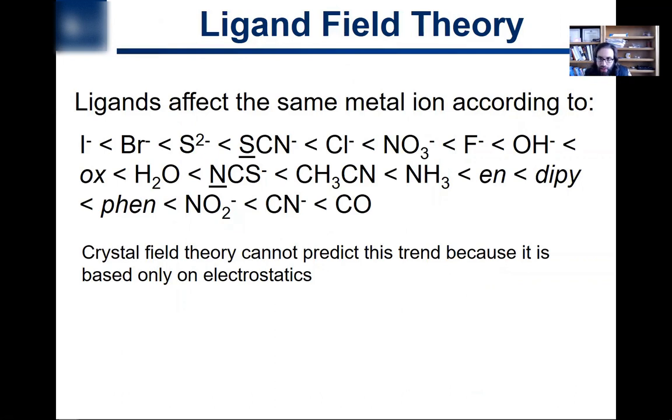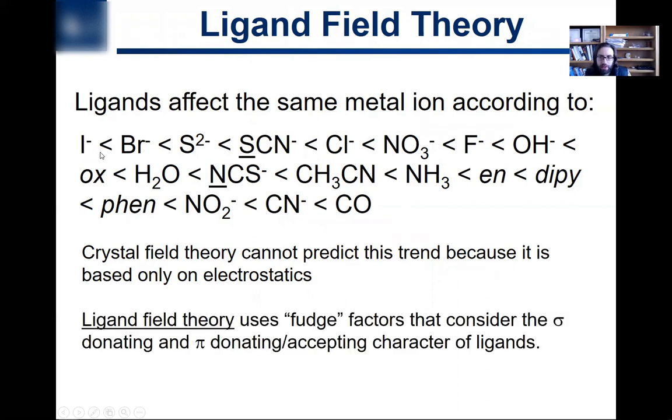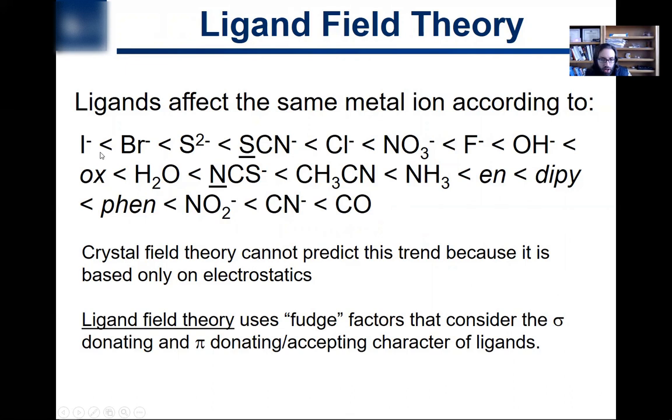So we were able then, by running through that logic, to rationalize the spectrochemical series, where we had pi accepting ligands, something like carbon monoxide was going to give rise to a big delta O because it's a pi acceptor, and something like a pi donating ligand is going to give rise to a small delta O.